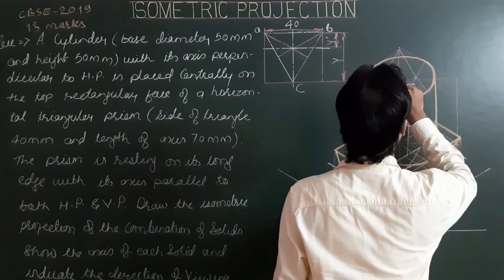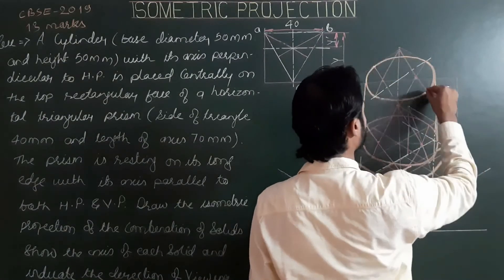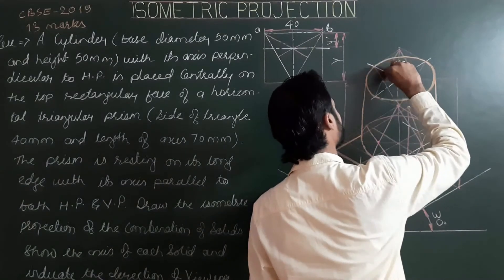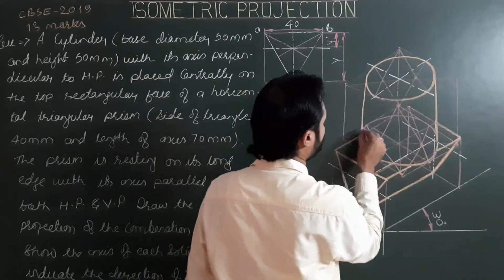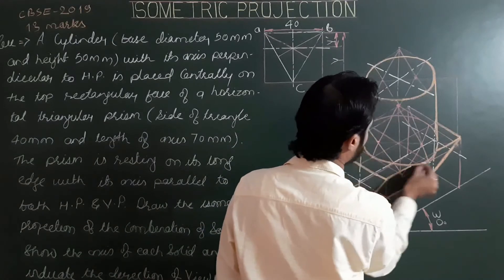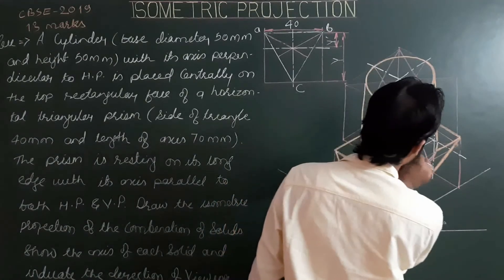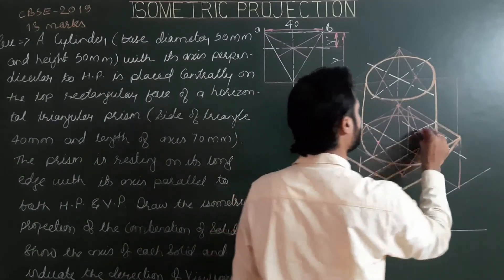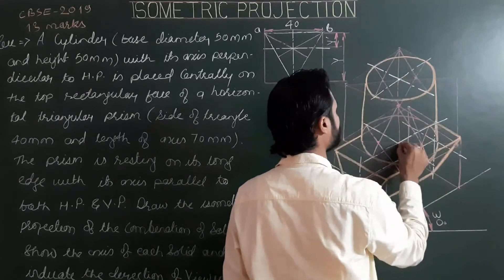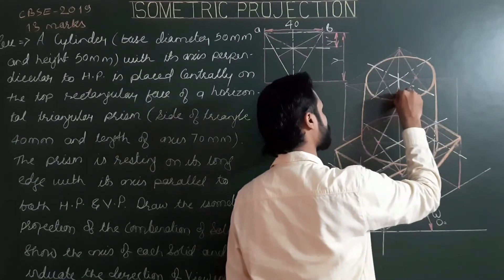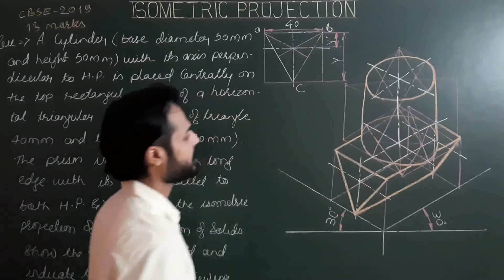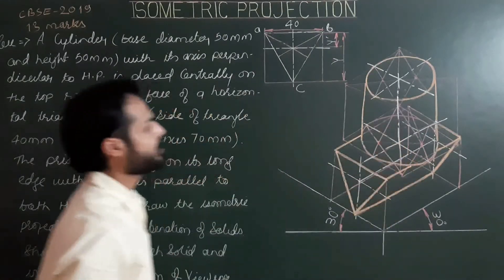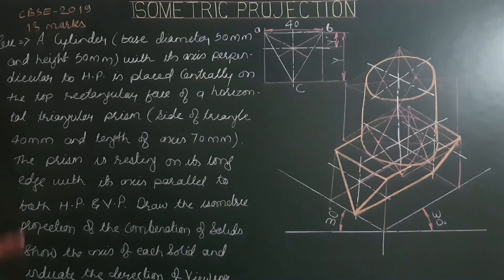Next, draw center lines for the cylinder — for the top base and for the bottom base. Then from the top base to the bottom base, draw the solid axis. This is the solid axis for the cylinder. In this problem, the axis of the cylinder and the axis of the prism are intersecting axes.